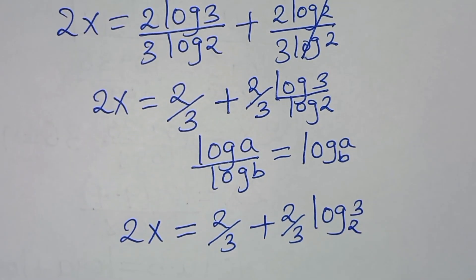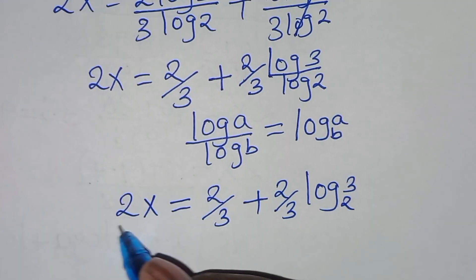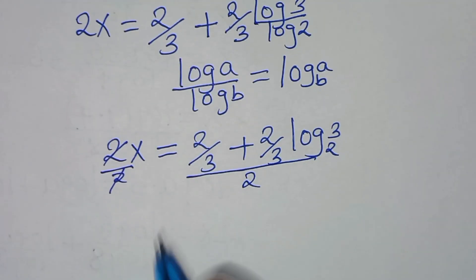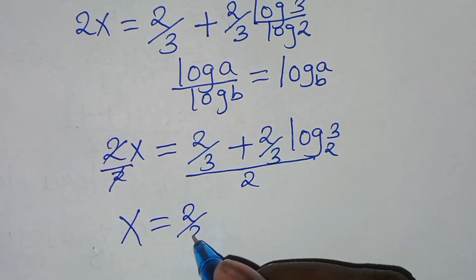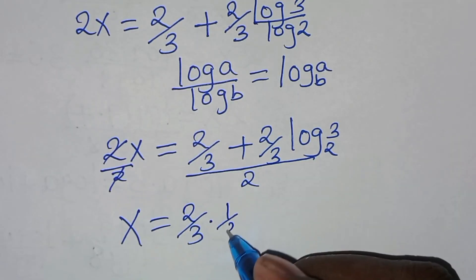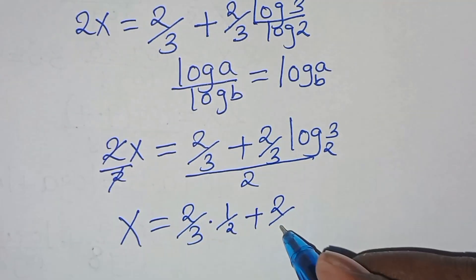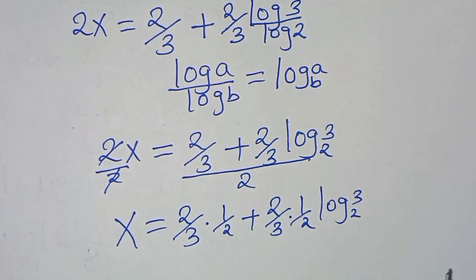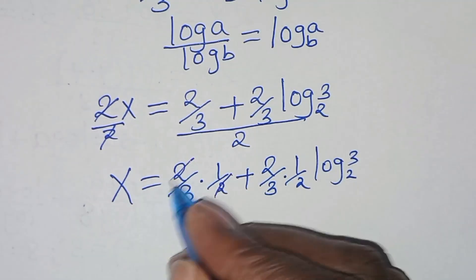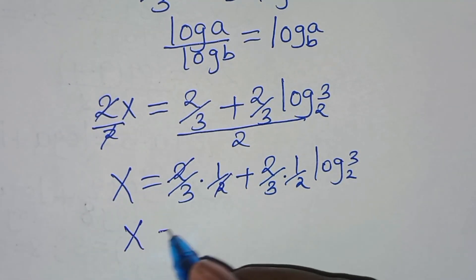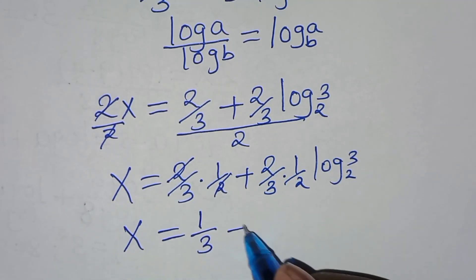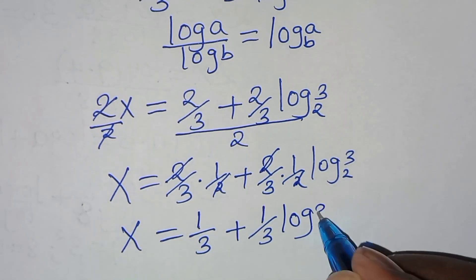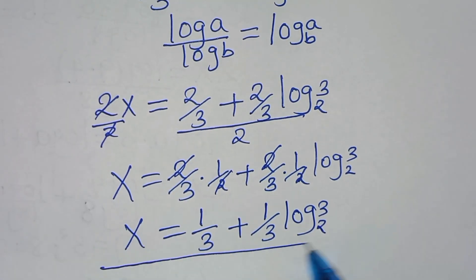The next step: divide both sides by 2. So x equals (2/3) times one-half, plus (2/3) times one-half times log₂3. Simplifying, x equals 1/3 plus (1/3)·log₂3. This is the value of x.